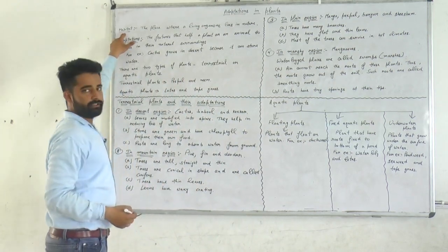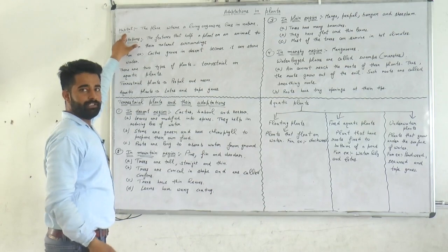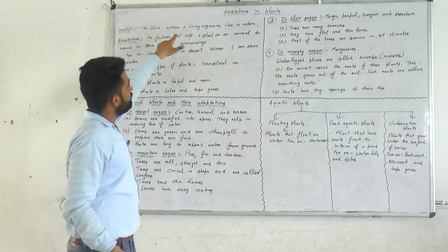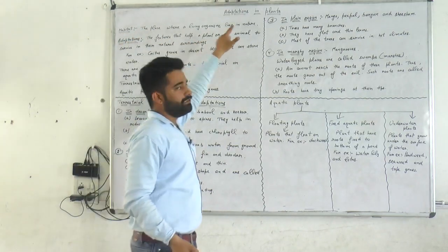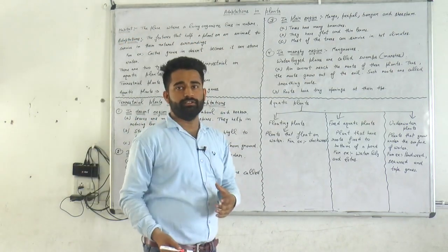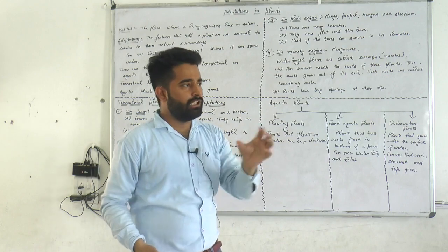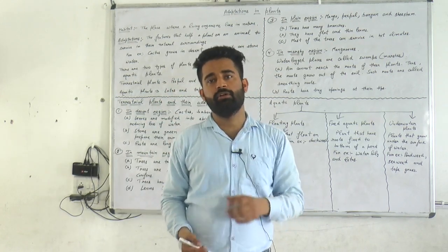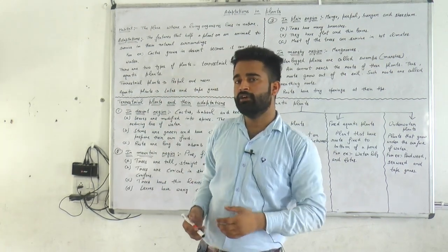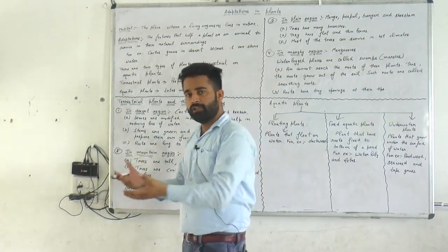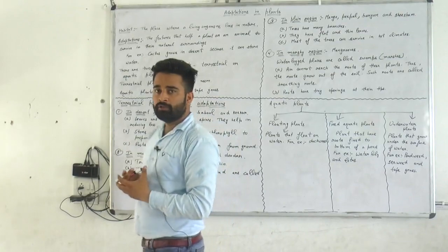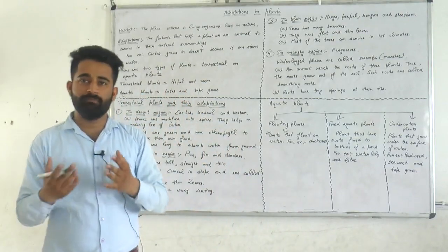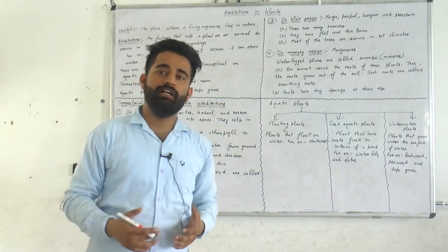The first term is habitat. What is habitat? The place where a living organism lives in nature is called habitat. For example, you live in your home, many animals live in the forest — that place is called habitat.